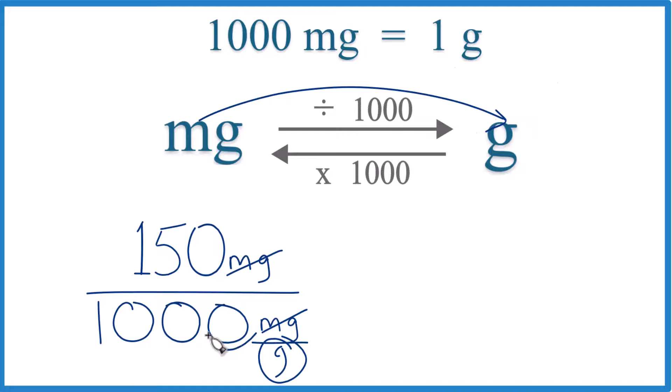So let's move the decimal point 1, 2, 3, and now we're just dividing by 1. We have to do it up here, too. 1, 2, 3, and we end up with 150 milligrams equals 0.15 grams.